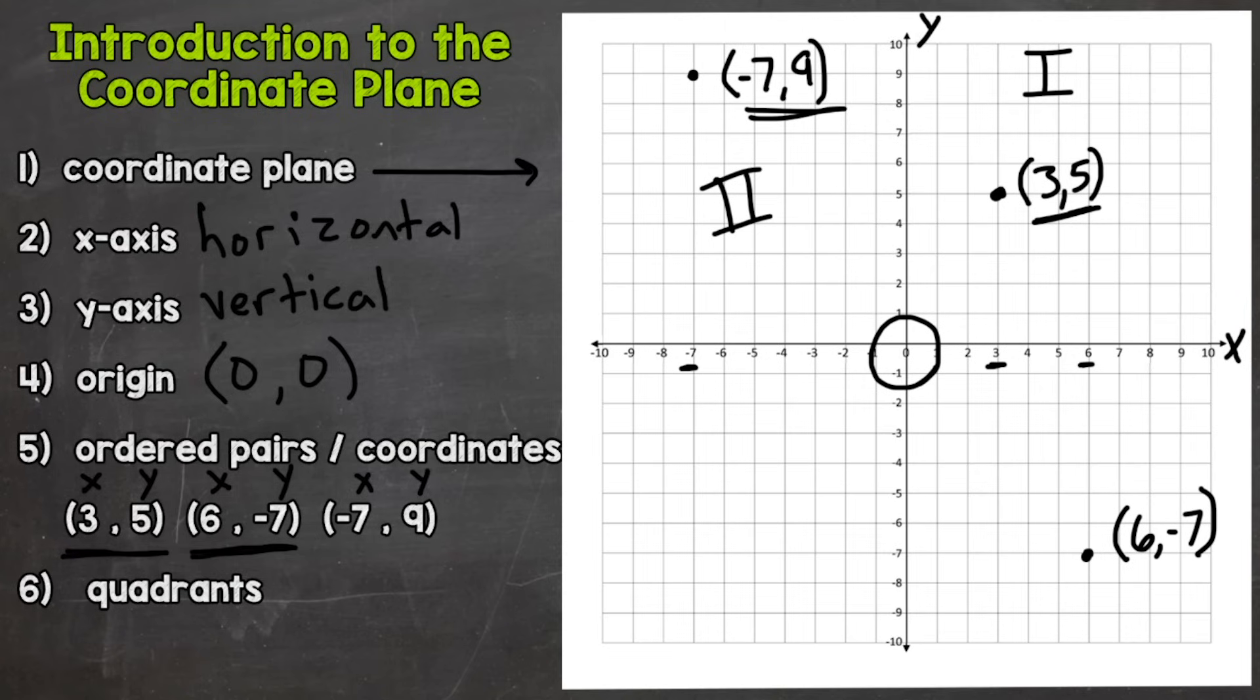Now we go down to the bottom left, and that is quadrant III. Then we go to the bottom right, and that is quadrant IV. We actually go around this way when we count out our four quadrants.